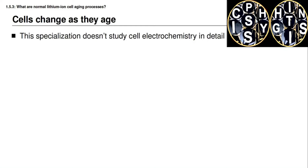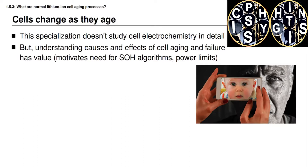This specialization does not study cell electrochemistry in detail, but understanding the causes and effects of cell aging, how they fail, and what that means to your application has real value when thinking about battery management system algorithms. For example, it motivates the need for state of health estimation algorithms and also for computing power limits in order to slow down degradation.